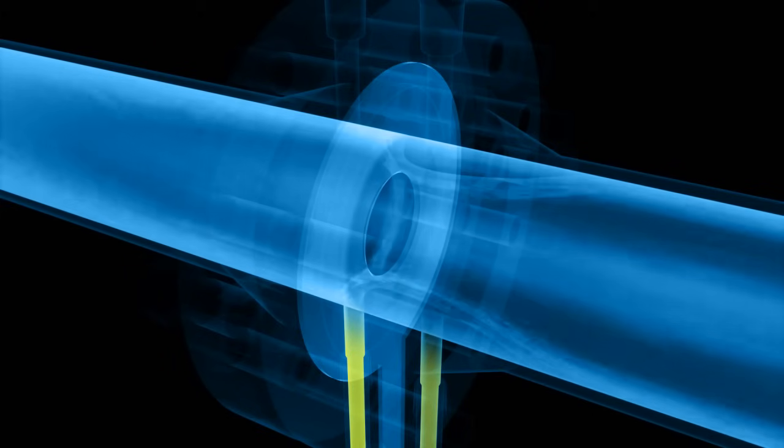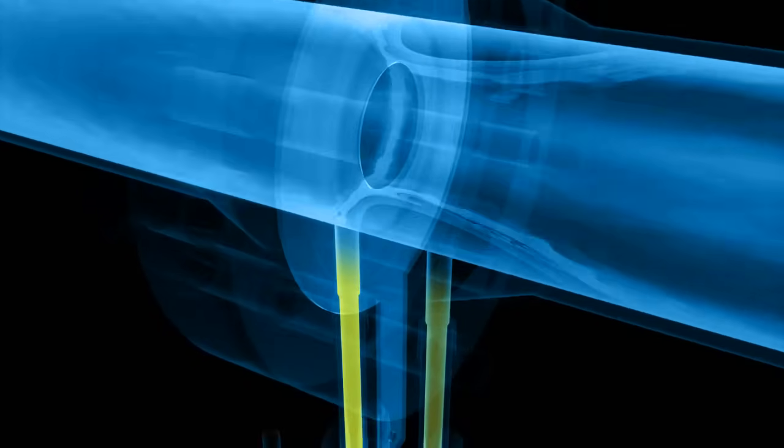As soon as the fluid starts to flow, its velocity around the orifice plate increases significantly because of the restriction in the cross section. At the same time, due to the laws of fluid mechanics, the static pressure at this point decreases.